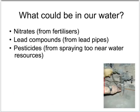Our drinking water might still contain some soluble substances. For example, it might contain nitrates if farmers have used nitrate fertilizers near watercourses from which we get our water. There might be lead compounds in our water from old lead pipes. And there might be pesticides in our water from spraying too near to water resources. All of these are soluble compounds and therefore very difficult to remove from our drinking water.